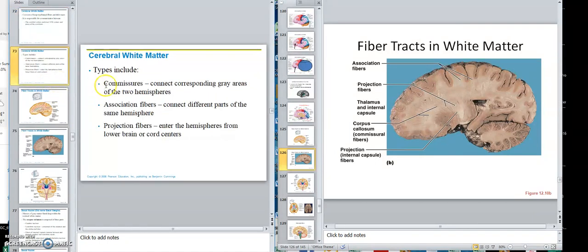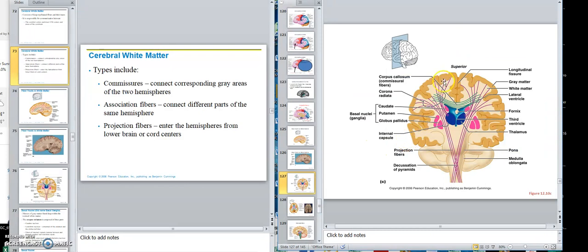Alright, so when we look at communication, we have what we call commissures. I don't know if you remember. A commissure is when one side communicates with the other side. Those are commissural fibers.